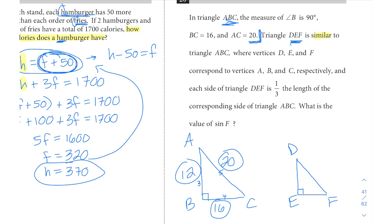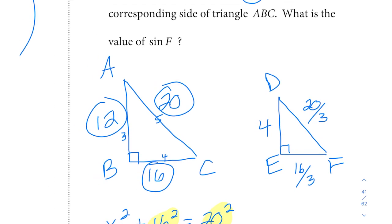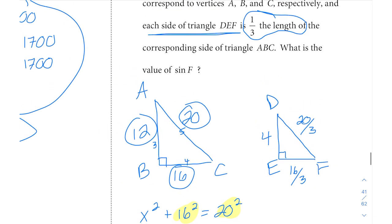Now they tell us that each side of triangle DEF is one-third the length of the corresponding side of triangle ABC. So basically, if you were to divide each of these values by 3: one-third of 12 is 4, one-third of 16 is 16/3, and one-third of 20 is 20/3. That gives us the side lengths of this triangle. When they say each side is one-third the length, just means multiply by 1/3 as a fraction, or you could think of that the same way as dividing by 3. Now we have the side lengths for triangle DEF.